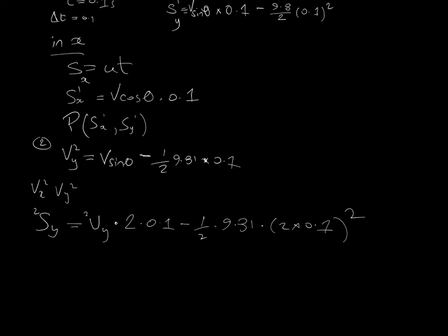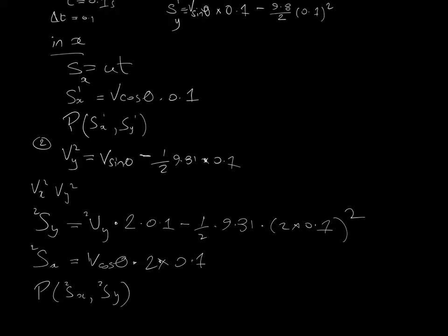Then to get my next x position, Sx2 is always equal to ut with no acceleration and no gravity. The velocity never changes in x, so it's always V cos theta. Sx2 equals V cos theta times 2 times 0.1. That gives me my second point along the trajectory.